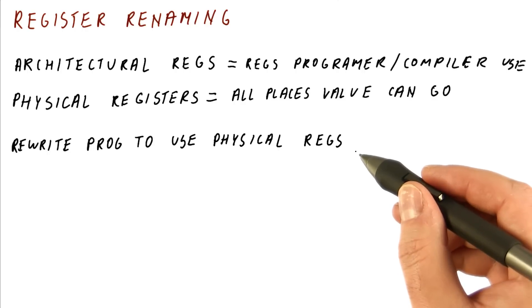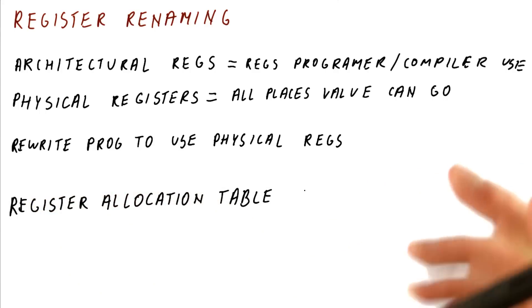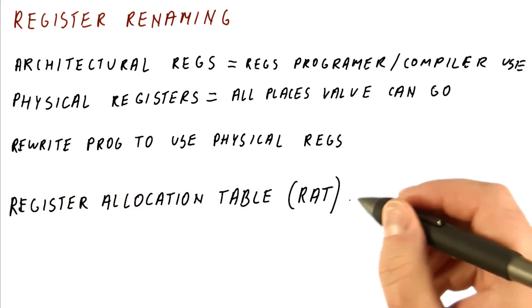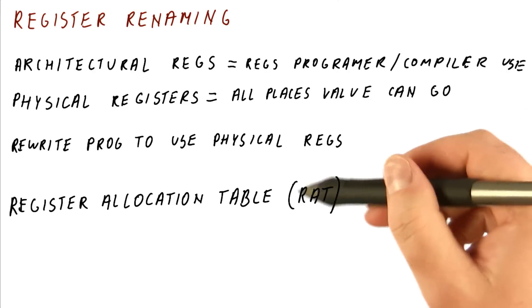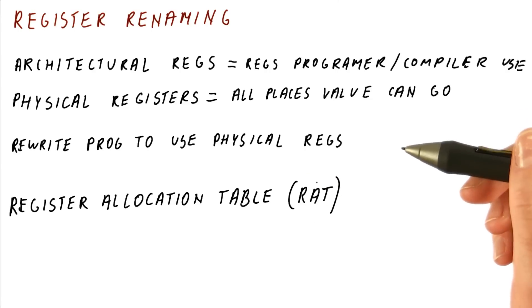How does it know where the values are? Well, it uses a table called the register allocation table, or RAT, and you should remember this because we will be very frequently referring to the RAT because it's used very often.